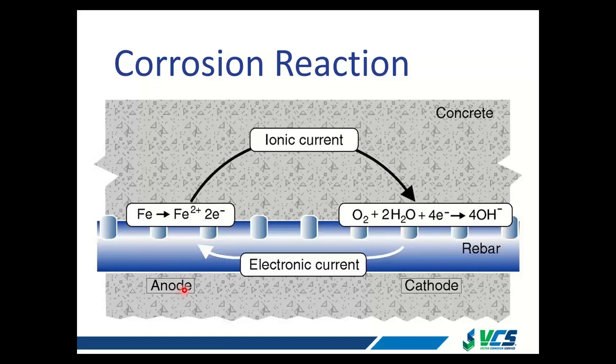If we remember back to high school chemistry, that electron that's freed has to be consumed somewhere — it has to have a balanced reaction. That electron moves over to the cathode, where it is consumed by oxygen and water to create hydroxyl. That's the balancing part of the corrosion reaction — whenever we have an anode, we have to have a balancing cathode. They're connected by a metallic path, and because corrosion is an electrochemical reaction, there has to be an electrical circuit. Ionic current flows through an electrolyte — which can be concrete, soil, or water — completing the circuit loop between the anode and cathode.